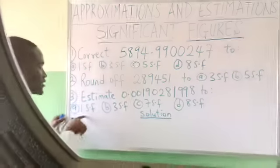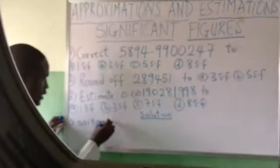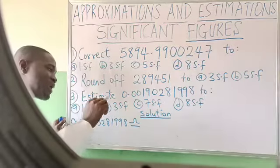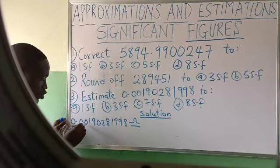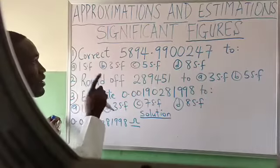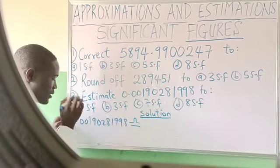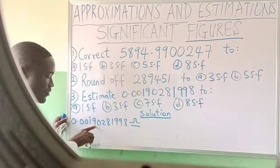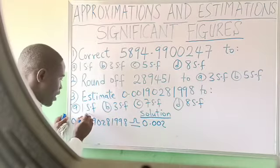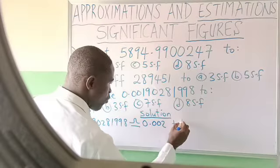Question 3: estimate 0.001902819998 to 1, 3, 7 and 8 significant figures. Rewrite everything: 0.001902819998, with the sign of approximation. Where do we start counting? Not from 0 — go to the first non-zero digit. We start from 1, since 1 is the first non-zero digit. For 1 significant figure, count just that 1. The next number is 9. Is it up to 5? Yes — call it 1, add it to 1: it becomes 2. So to 1 significant figure, the answer is 0.002.